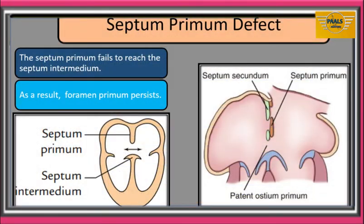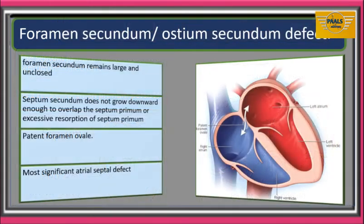In septum primum defect, septum primum fails to reach the septum intermedium. As a result, foramen primum will persist. In foramen secundum defect, it's a condition where septum secundum fails to cover foramen secundum. This defect occurs if septum secundum does not grow downward adequately to overlap the septum primum, or if the septum primum undergoes excessive resorption.